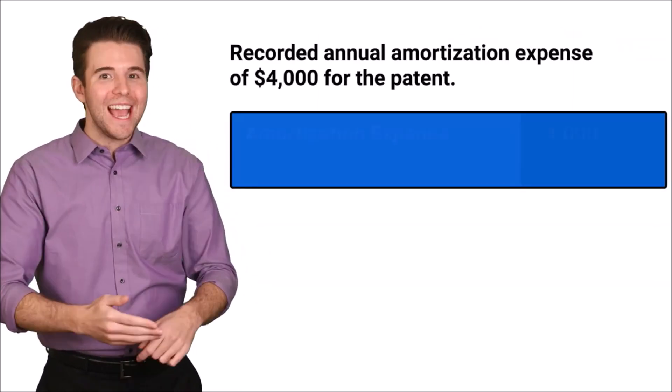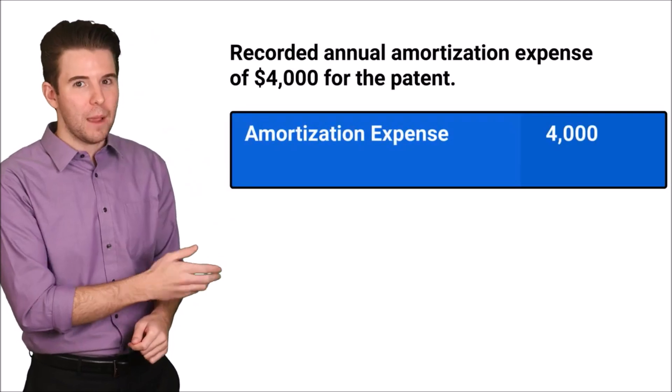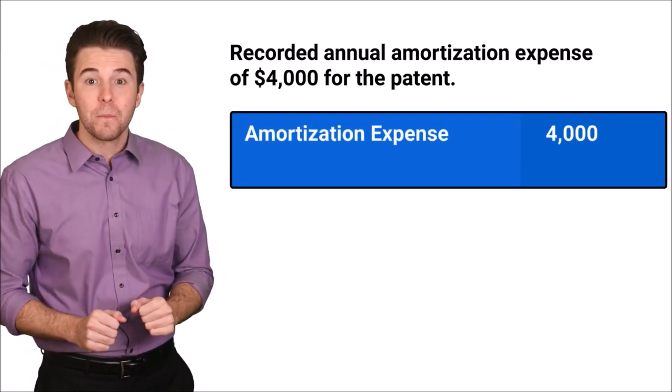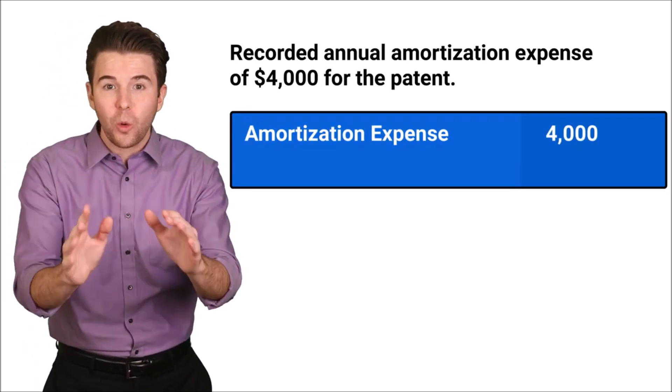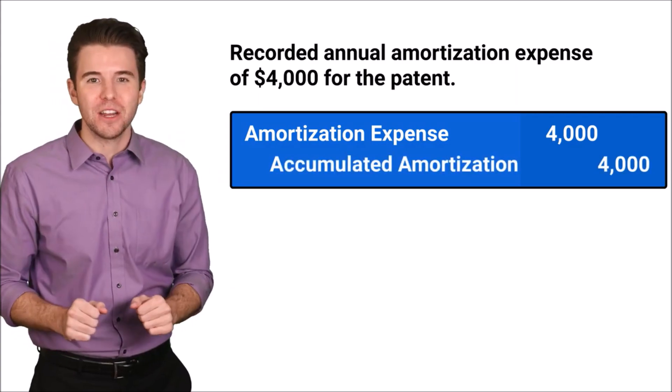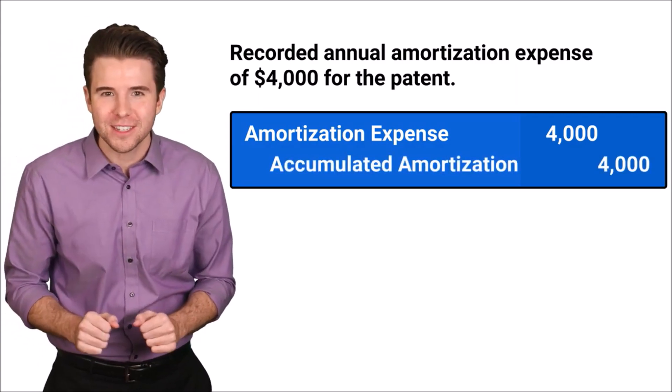To record the journal entry, we debit amortization expense for $4,000 and credit accumulated amortization for $4,000.